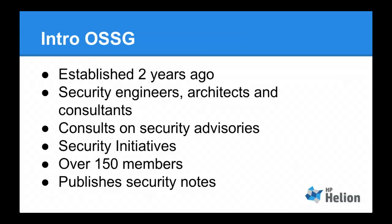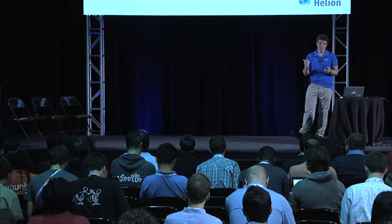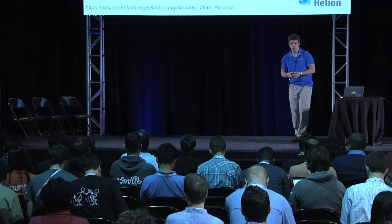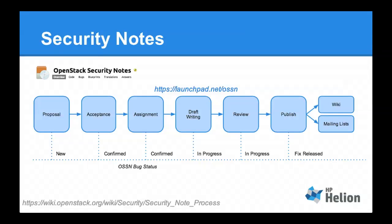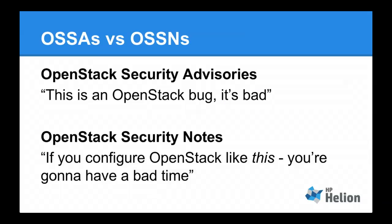The OpenStack Security Group was established about two years ago by myself and Brian Payne from Nebula. It consists mainly of security engineers, architects, consultants, and developers. We consult with the vulnerability management team on security advisories — for instance, when something comes in, they might ask how it affects the public cloud or a private appliance-led deployment. We run a number of security initiatives and have over 150 members, and we publish security notes. Security notes kind of mirror advisories, and they exist to provide information about parts of your configuration or bits in OpenStack that might cause security issues.